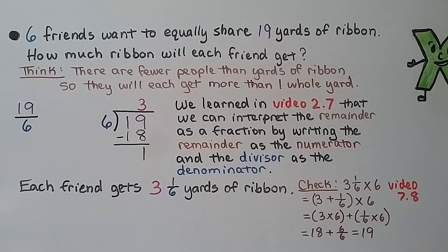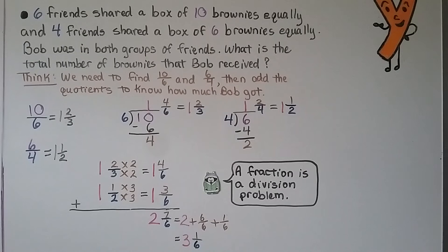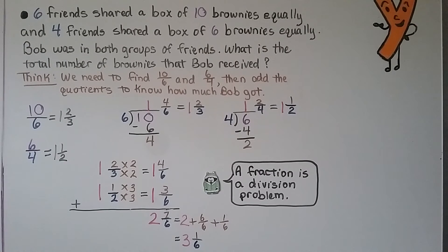Those previous videos are linked in the description if you need them. It's very helpful to know how to write the remainder and divisor as a fraction of the quotient. 6 friends shared a box of 10 brownies equally, and 4 friends shared a box of 6 brownies equally. Bob was in both groups. What is the total number of brownies Bob received? We need to find 10 divided by 6 and 6 divided by 4, then add the quotients.